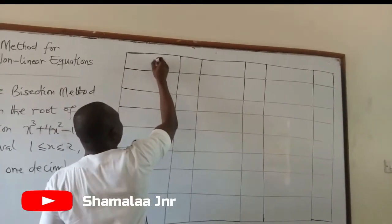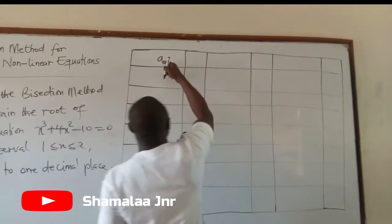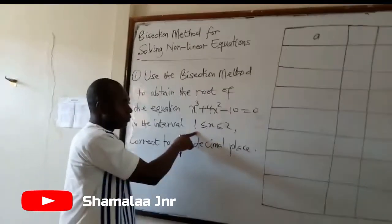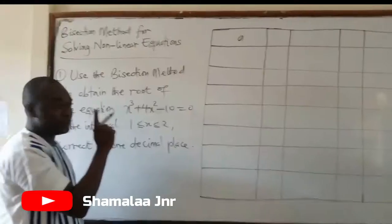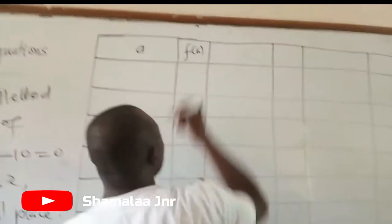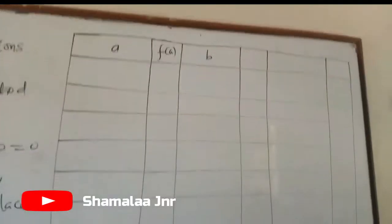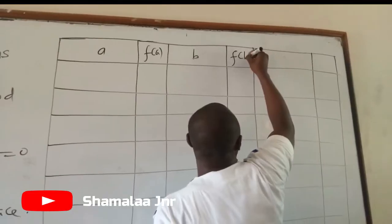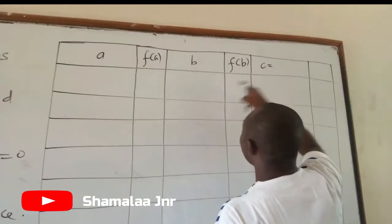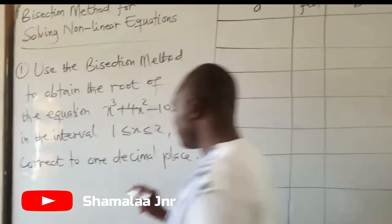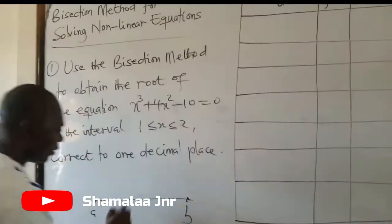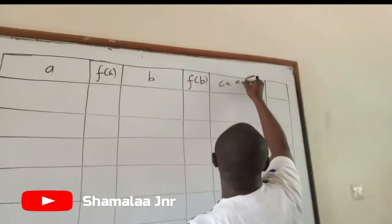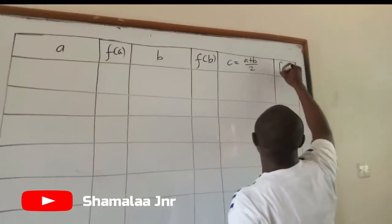The first item in the table is A. A is the lower limit of the interval containing the roots. Then you find the functional value of A. Then B, which is the upper limit of the interval — in this case, 2 to start. Then you find the functional value of B. Then move ahead to find C, the midpoint of A and B, because this is the bisection method. So C = (A + B) / 2, and then you find the functional value of C.